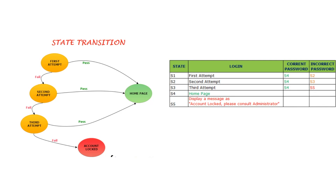Let's consider this example: a password text box where you can attempt to enter the password three times. If you attempt correctly, you are redirected to the home page; otherwise your account gets locked. We draw a state transition diagram: if the first attempt passes, go to home page; if it fails, go to second attempt. If second attempt passes, go to home page; if it fails, go to third attempt. If the third attempt passes, go to home page; otherwise the account is locked.